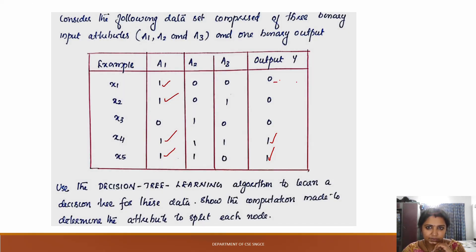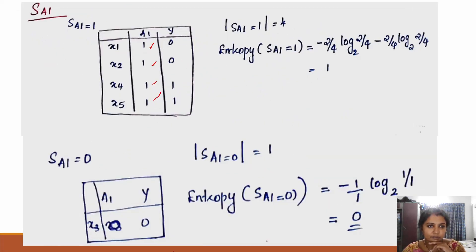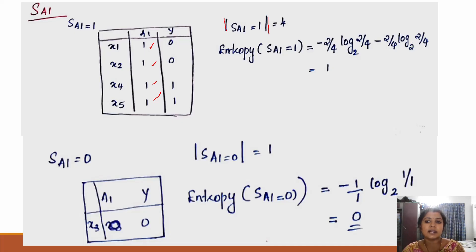The y values are 0, 0, 1, 1, 1 across the dataset. This is the number of samples where A1 equals 1, and this is the entropy of the subset where A1 equals 1.